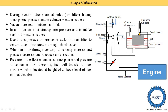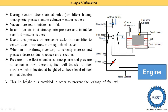Z is the distance between the top of the nozzle and the maximum fuel level in the float chamber — it is called the lip height. It is provided to prevent leakage of fuel when the engine is not working. If the nozzle were at the same height as the fuel level, fuel would flow out when the engine is off. That's why a lower height is maintained for the fuel in the float chamber to avoid leakage.